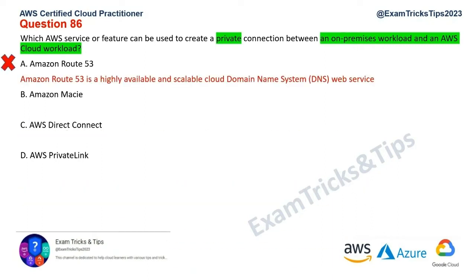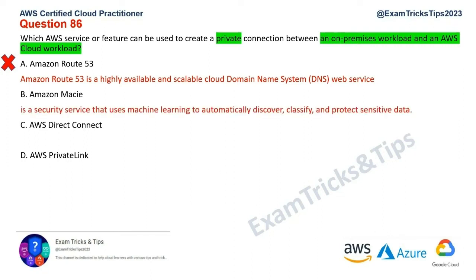The second wrong option is Amazon Macie. Macie is used to automatically discover, classify, and protect sensitive data. So if you have any documentation that involves personally identifiable data, Macie is the service that would go through all the documentation and highlight anything that is privacy-sensitive and needs encryption. It's not used for connection between on-premise and AWS Cloud workloads, so Macie is wrong as well.